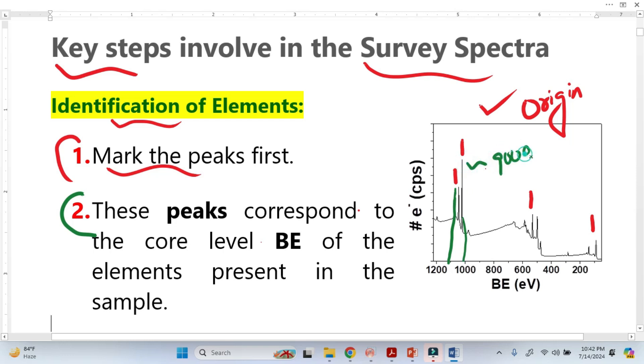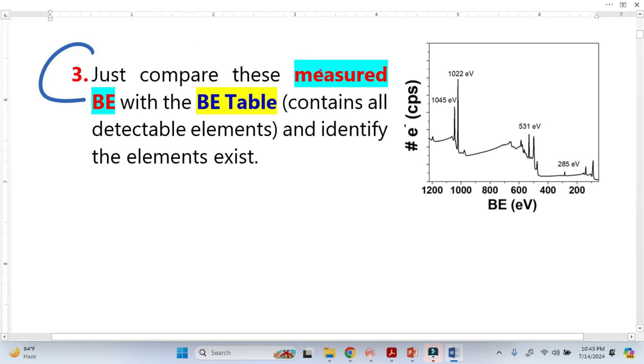Now in the third step, just compare the binding energy in step two with the binding tables. We have the binding tables and it is available online. This binding table contains all elements binding energy except helium and hydrogen. So just compare the binding energy values from step two to this step, the binding energy tables, and just write those values here.